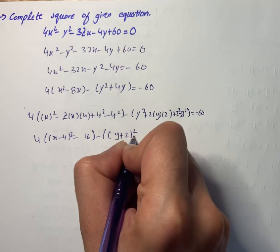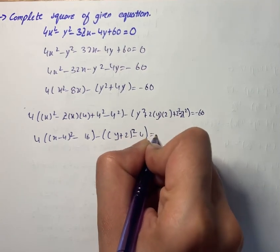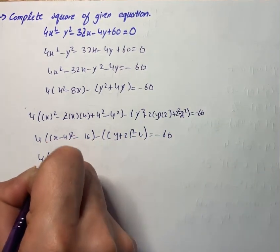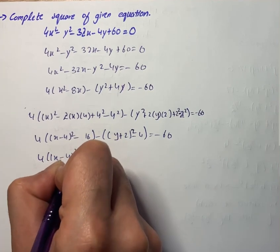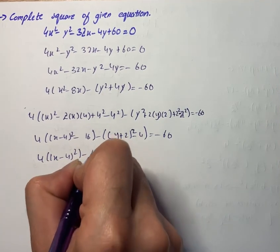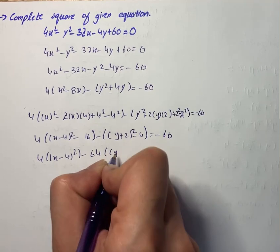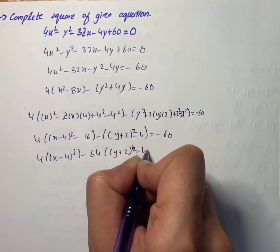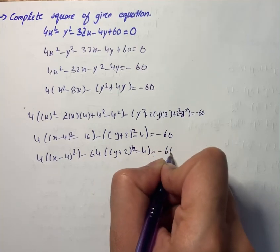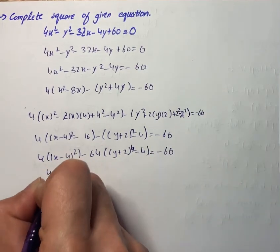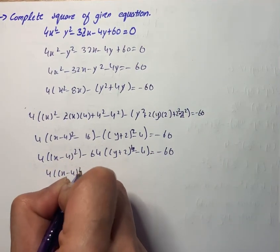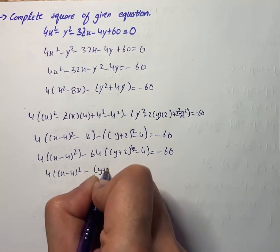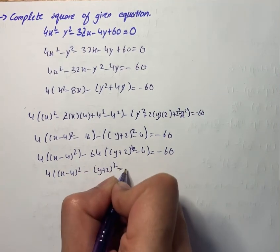On further simplification we have 4(x−4)² − 64 − (y+2)² + 4 = −60, which gives us 4(x−4)² − (y+2)² = 0.